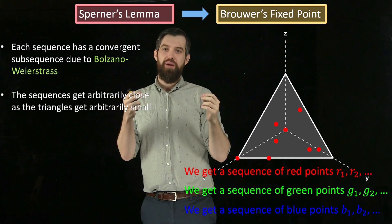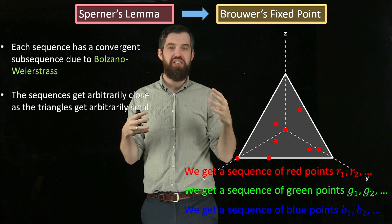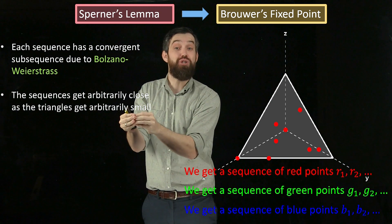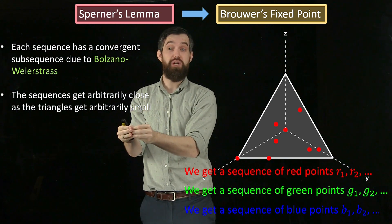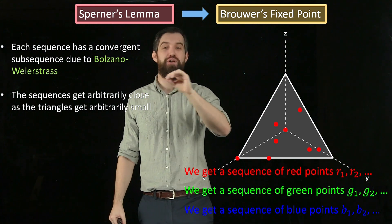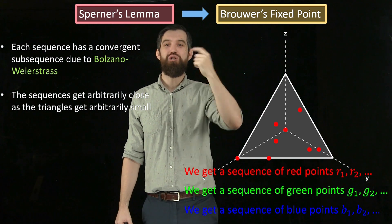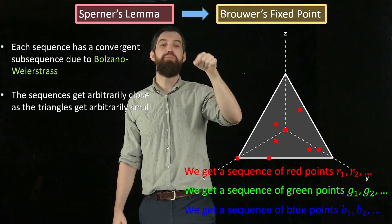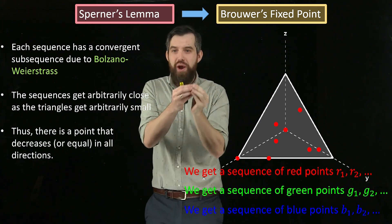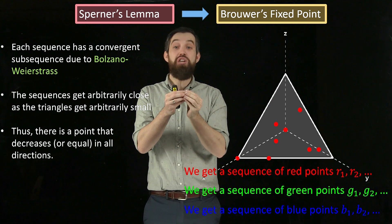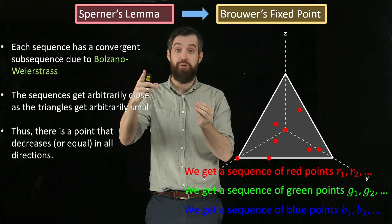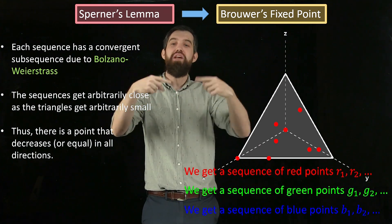Furthermore, as we sub-triangulate further and further, the three different colors keep on getting closer and closer to each other as the triangles get smaller. So the point where the reds converge is also the point where the greens converge and where the blues converge. This means there is some point where the function is decreasing in all three directions — and decreasing was our condition for red, blue, and green.